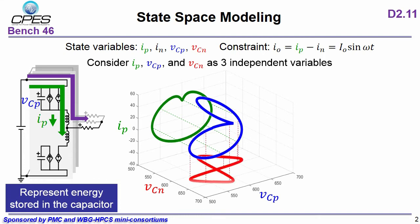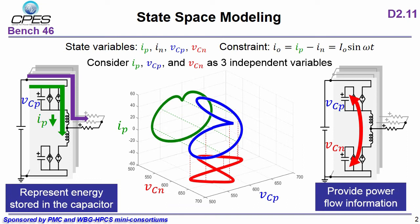If we project this trajectory onto VCP and VCN's state-plane, we basically focus on these two capacitors. So this state-plane provides the power flow information because we can know the energy flow between these two capacitors and outside these two capacitors.